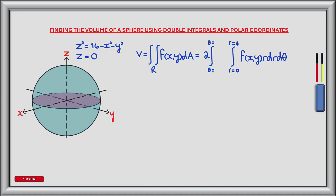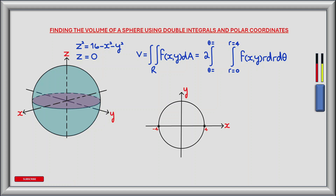Now let's find the limits of the outer integral — that's when r rotates about theta across the region R. As r rotates, it begins at theta equals 0 and advances 360 degrees, or 2 pi radians, around the circle. Each sector represents an angle of d theta. By summing all infinitesimally small sectors we get the total volume. So the lower limit of the outer integral is theta equals 0 and the upper limit is theta equals 2 pi radians.